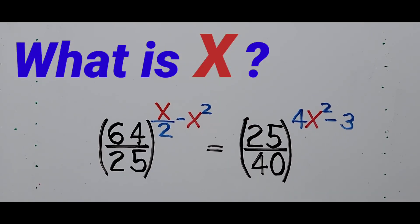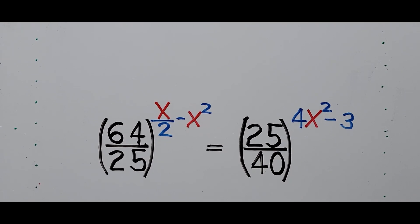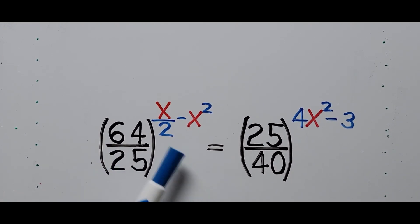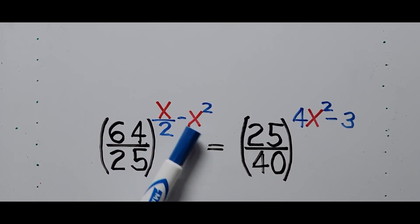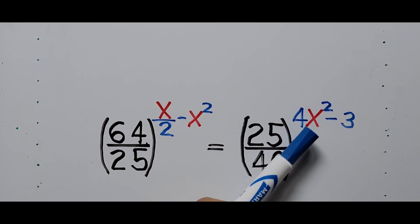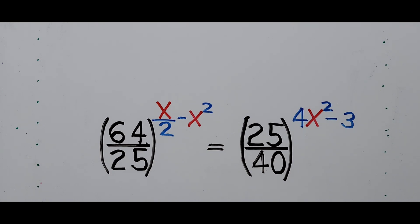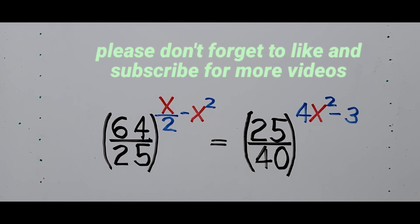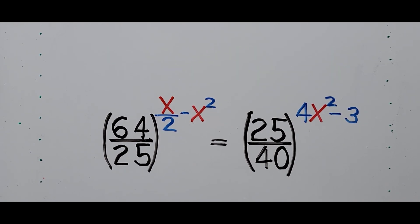Hello everyone, welcome to Cassiano Easy Math. Today's video is about solving another exponential equation. We have 64 divided by 25 to the power x over 2 minus x squared, equals 25 divided by 40 to the power 4x squared minus 3. We're solving for the value of x. For those new to my channel, please don't forget to like and subscribe for more videos. Now let's start solving the exponential equation.